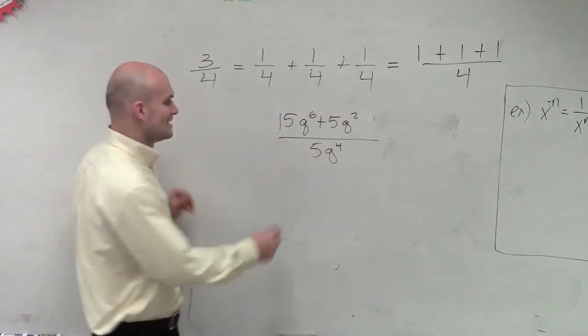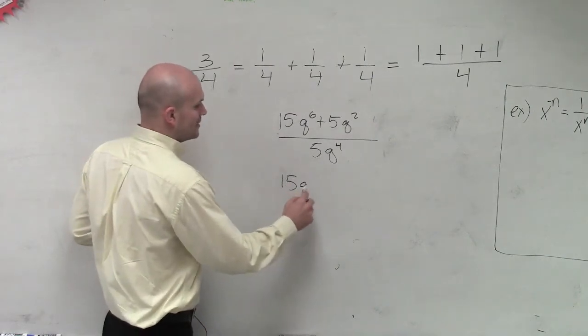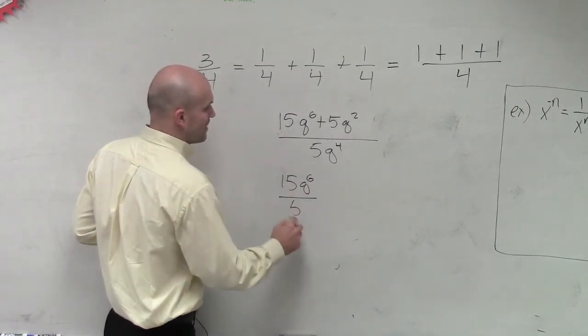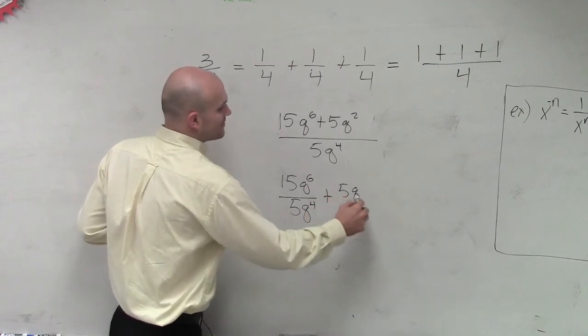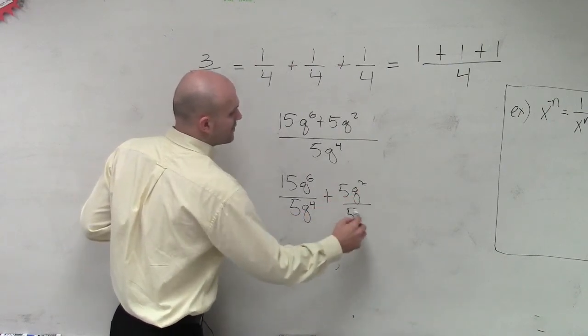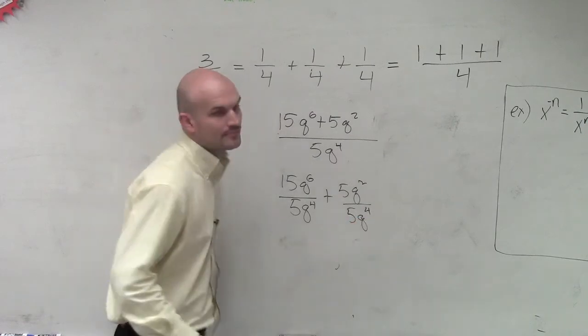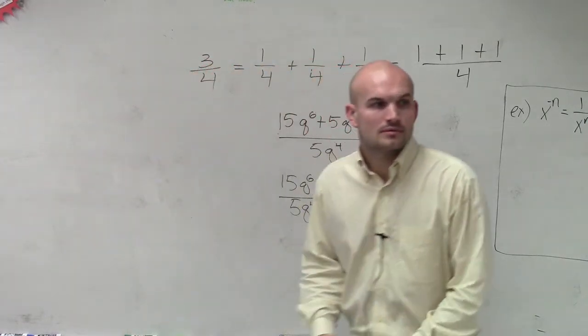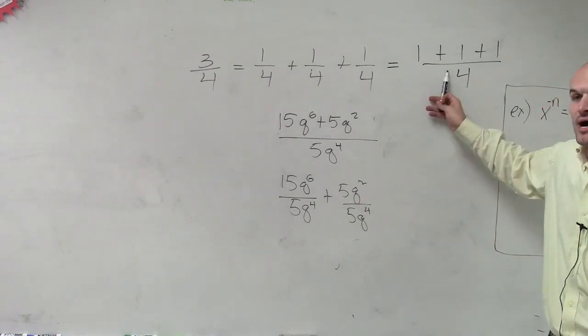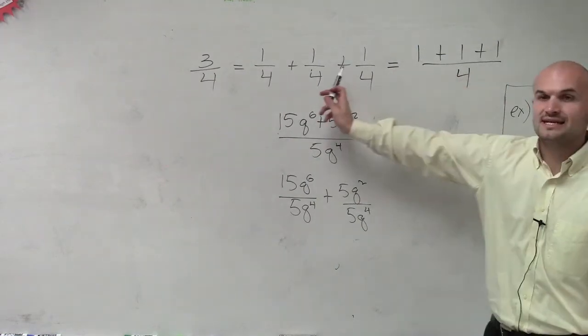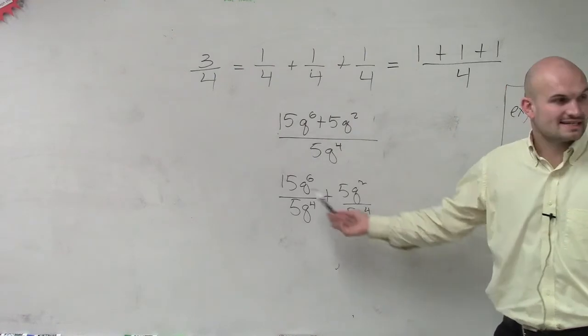So I'm going to rewrite this as 15q to the 6 divided by 5q to the fourth plus 5q squared over 5q to the fourth. Does everybody agree with what I did? I pretty much was given a problem that was in this format. And what I did is I split it up with the exact same denominator.